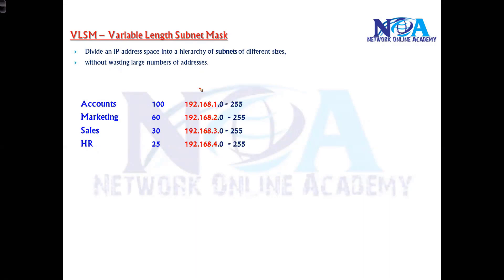Without subnetting, I can simply use one C class for each department. So maybe 192.168.1.0 for Accounts department, 192.168.2.0 for Marketing, 192.168.3.0 for Sales, and 192.168.4.0 for HR.